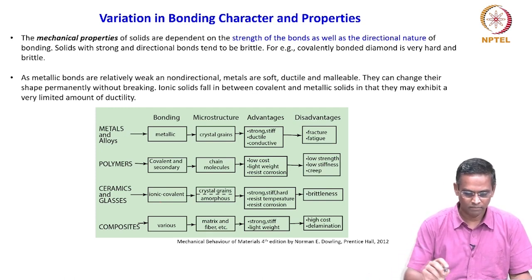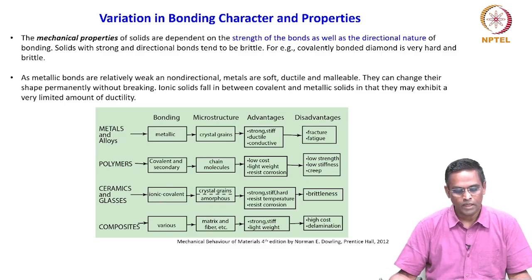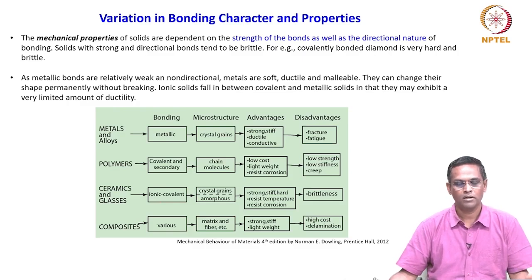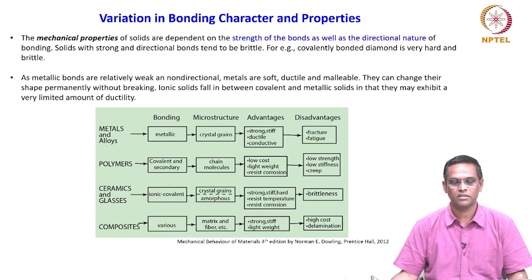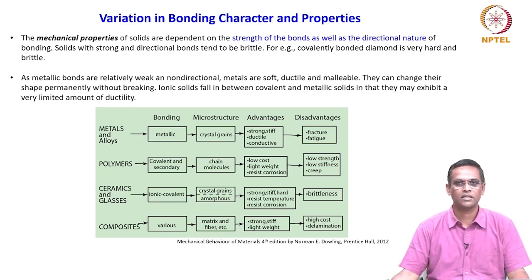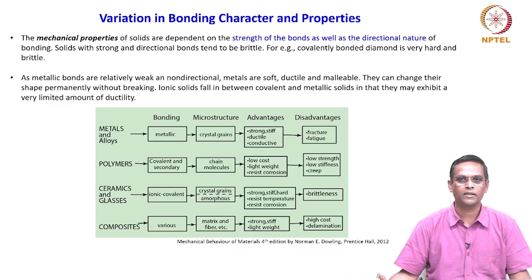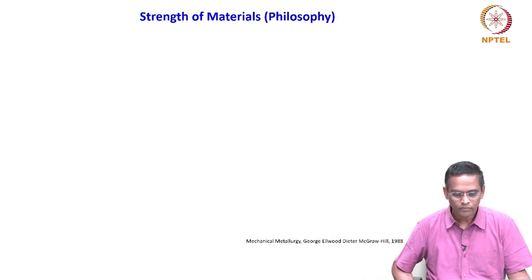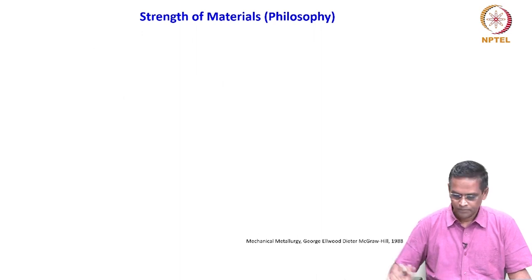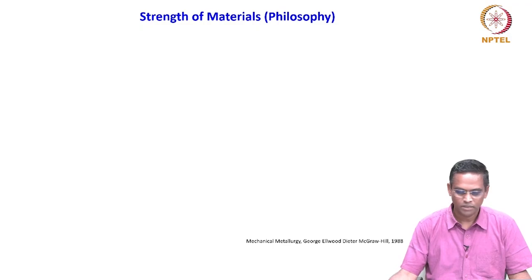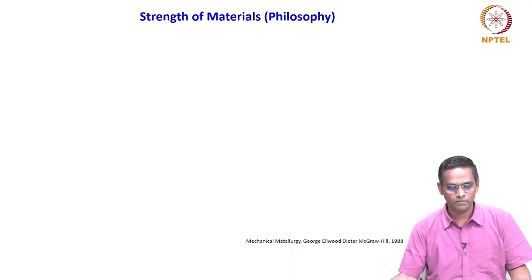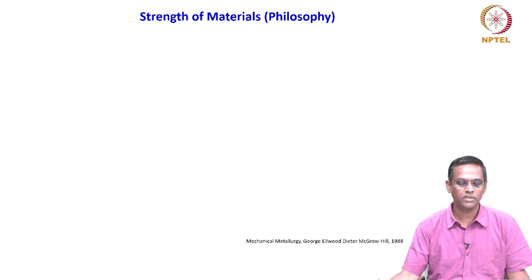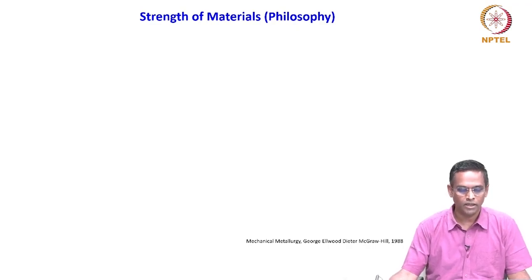This table clearly demonstrates a strong connection between the chemical bond of a material and what kind of mechanical properties it exhibits. That is the reason we are looking at chemical bonding much more closely. The next important subject I want to review — like chemical bonding — is strength of materials, which we will review before proceeding further.